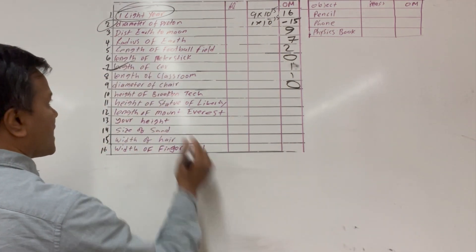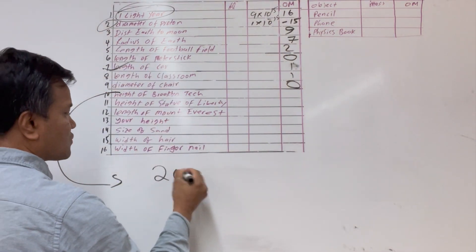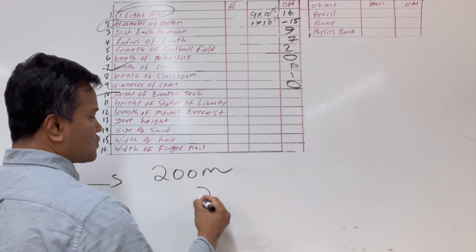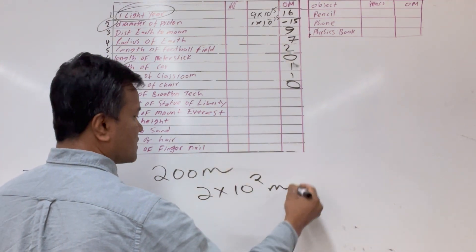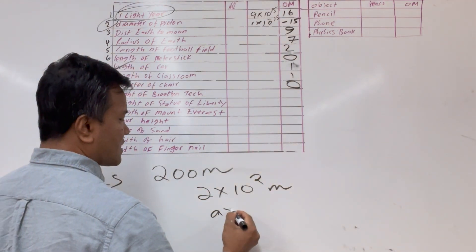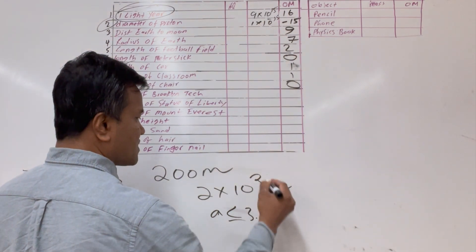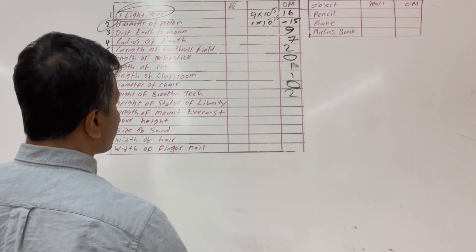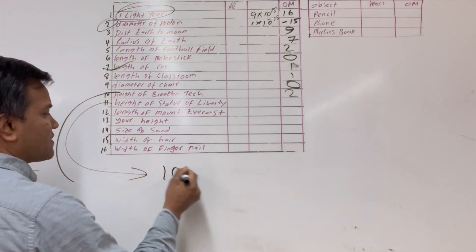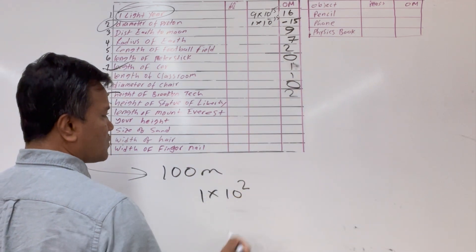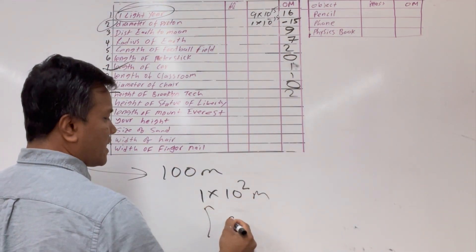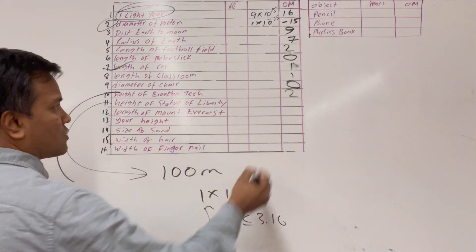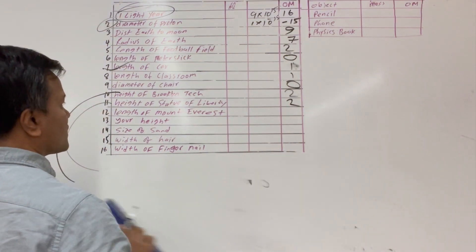The height of the Brooklyn building is about 200 meters: 2×10². Since A equals 2 is less than 3.16, B plus 0 gives an order of magnitude of 2. The height of the Statue of Liberty is about half that — 1×10² meters — so A is also less than 3.16, and the order of magnitude is also 2.